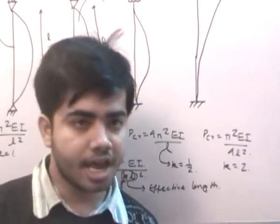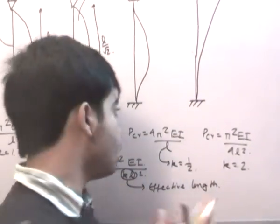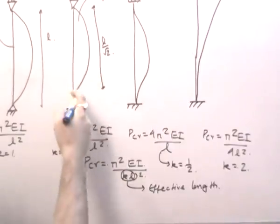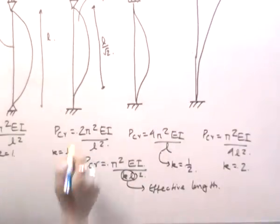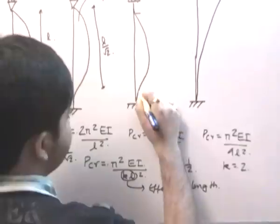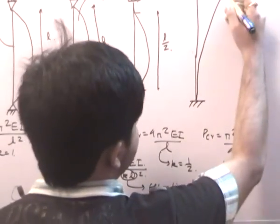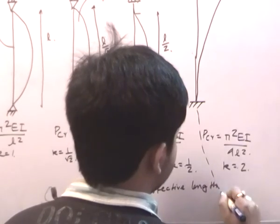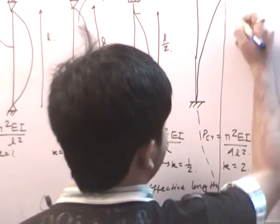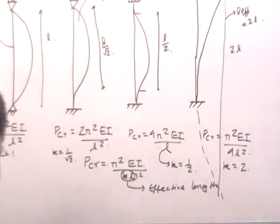Inflection points, as we know from calculus, are those points where the second derivative changes sign — where the curve changes from concave to convex. The distance between the two inflection points for fixed-hinge is L/√2, for fixed-fixed it is L/2, and for fixed-free the effective length extends to 2L, making the total length equal to 2L.